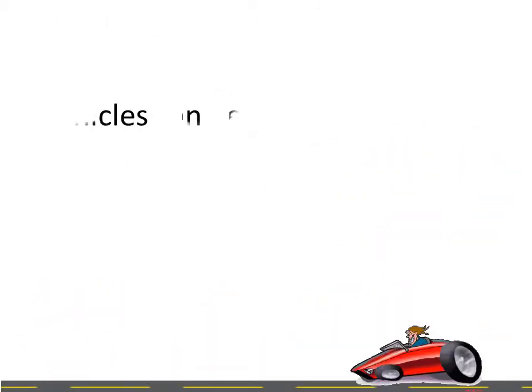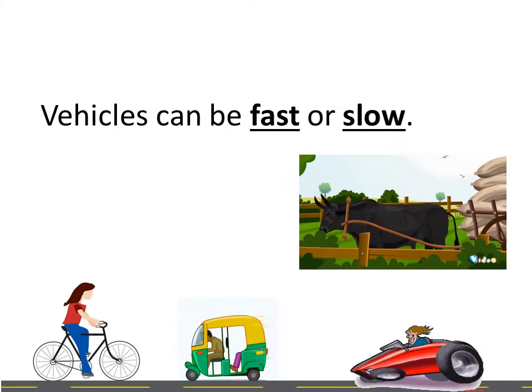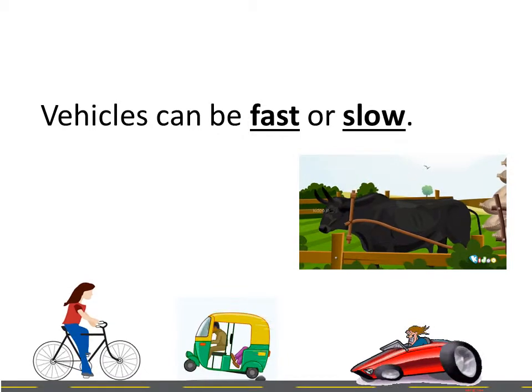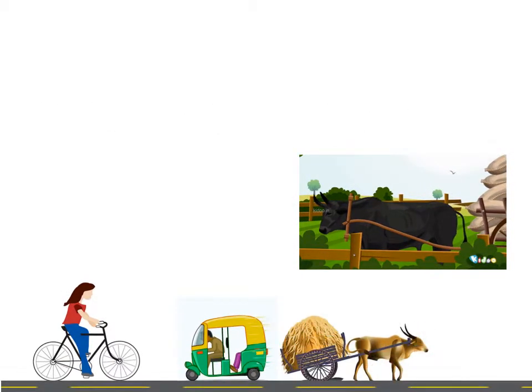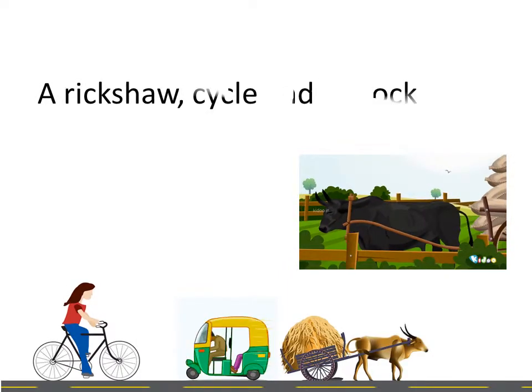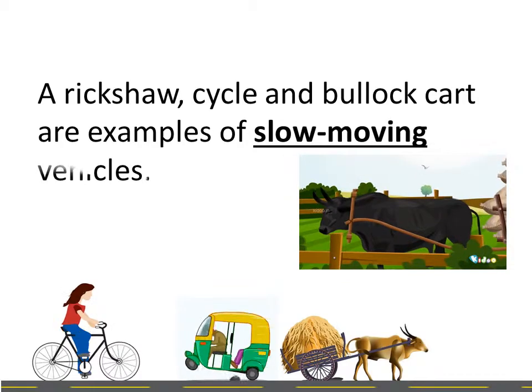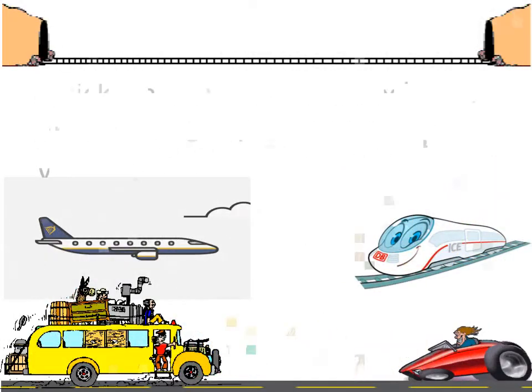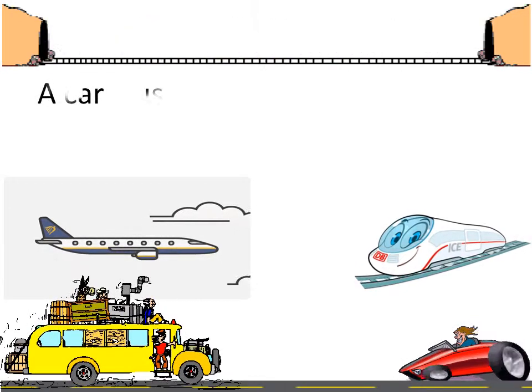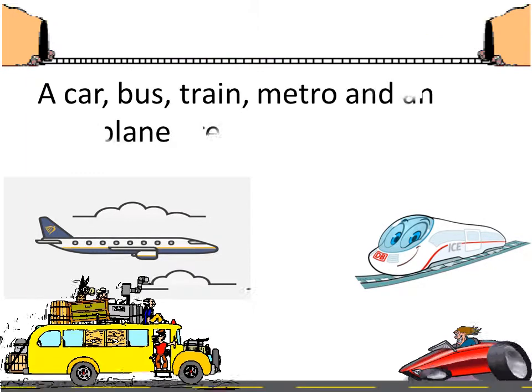Vehicles can be fast or slow. A rickshaw, a cycle and bullock cart are examples of slow moving vehicles. A car, bus, train, metro and an aeroplane are examples of fast moving vehicles.